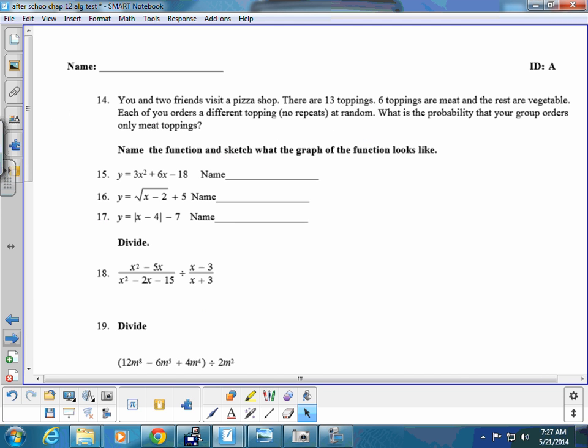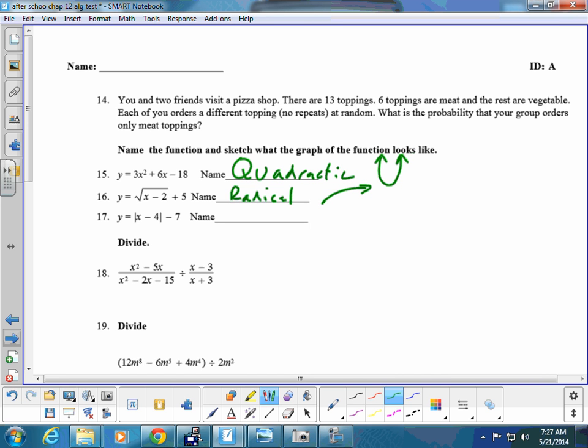Moving on to this here, these are quick questions. This is a quadratic. It makes a parabola. In this case, it's happy. This is a square root, also known as a radical. Radical, and it makes a swoosh like that. This is a dot. And then the last one is absolute value, as in V, and it makes a V. That's quick answers there.